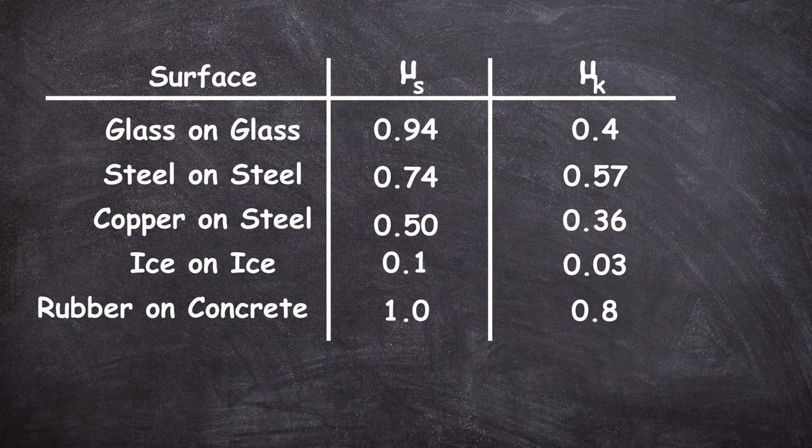The next type of friction is kinetic friction, which resists the motion of an object that is already moving. Kinetic friction is always less than static friction. For example, glass on glass: static friction is 0.94, kinetic is 0.40. Steel on steel: static is 0.74, kinetic is 0.57. Copper on steel: static is 0.53, kinetic is 0.36. Ice on ice: static is 0.10, kinetic is 0.03. That means once an object actually starts moving, the friction becomes less.